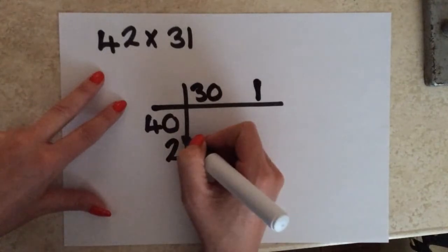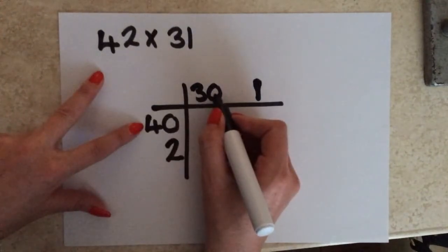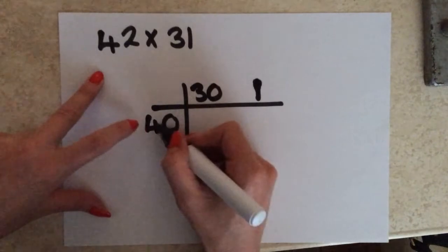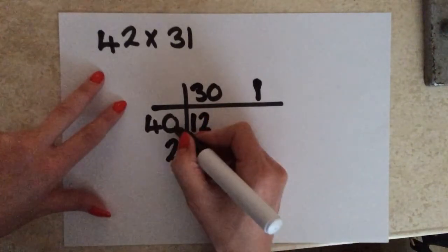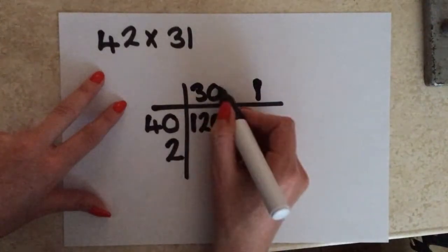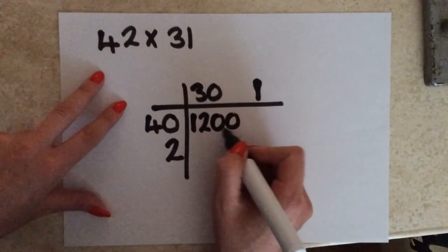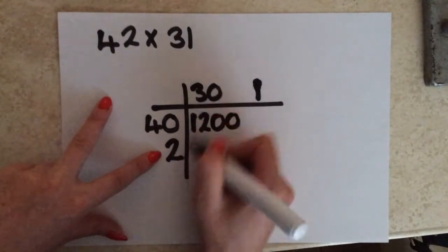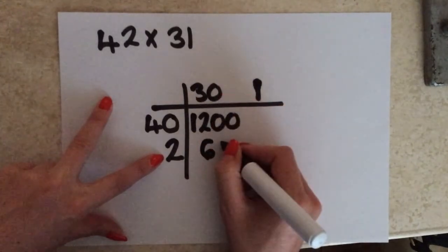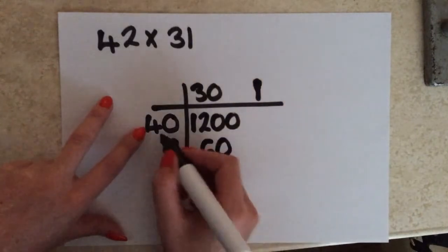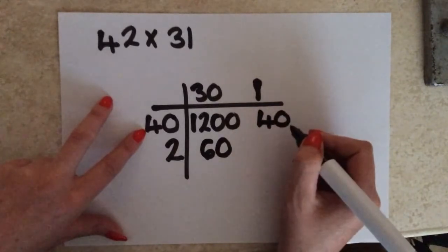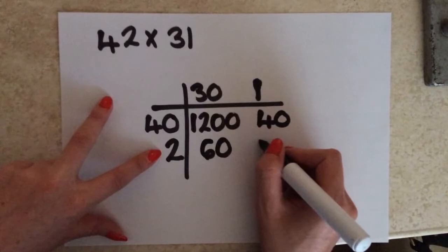We've then got to multiply together 40 by 30. So the easiest thing to do is to multiply the numbers which aren't zeros, which is the 4 by the 3. So 4 times 3 will give you 12, and then there's 2 zeros — the amount of zeros that are in the question will match the amount of zeros in your answer. Then I'm going to multiply 2 by 30: so 2 times 3 gives me 6, and then add on 1 zero. Then I'm going to multiply 40 by 1, which is easy — 40. And then 2 by 1, which gives me 2.